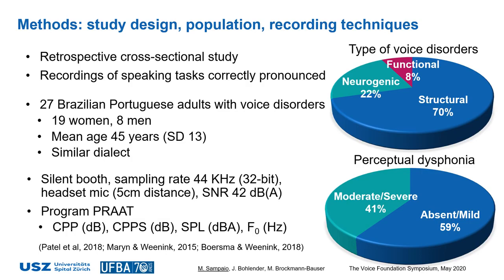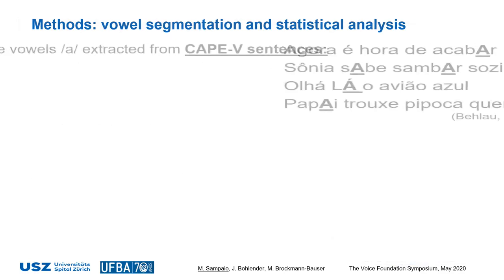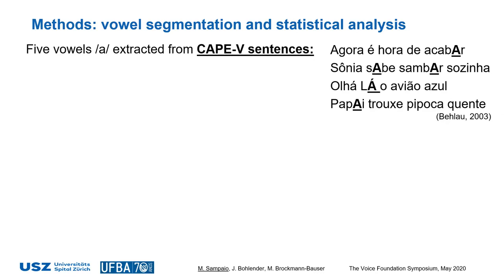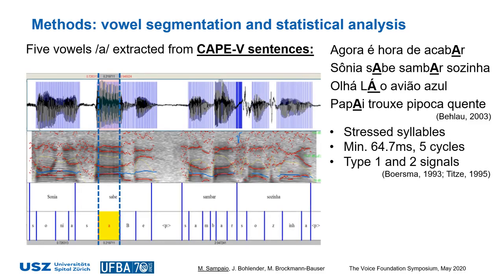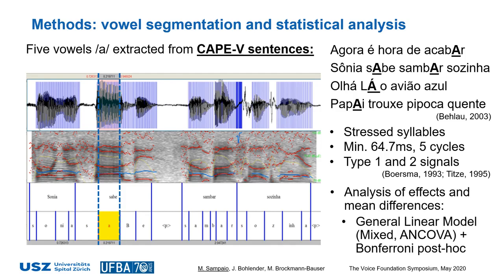The voice recordings, vowel transcription and segmentation, and acoustic analysis were done using the Praat program. Selected outcome measures were CPP, CPPS, voice intensity measured as calibrated SPL, and fundamental frequency. We selected 5 vowels A from 4 KPPS sentences in their Brazilian-Portuguese version. The vowels were located in different positions of words and sentences and all belonged to stressed syllables. Vowel extraction was done with the help of the wideband spectrogram. Included were vowels with a minimum of 64.7 ms duration, 5 full cycles, and type 1 and 2 signals, after excluding the phonetic transitions. Statistical analysis comprised linear mixed models with analysis of covariance and Bonferroni post-hoc tests.